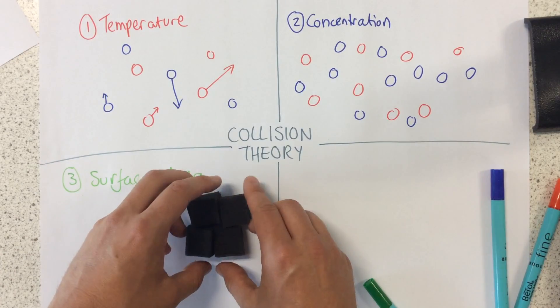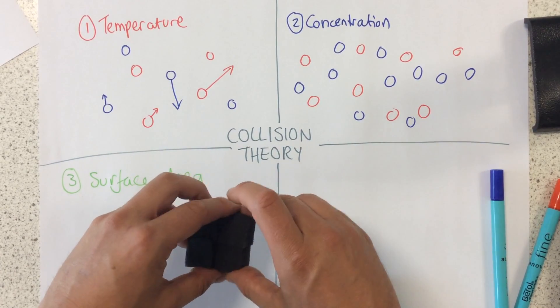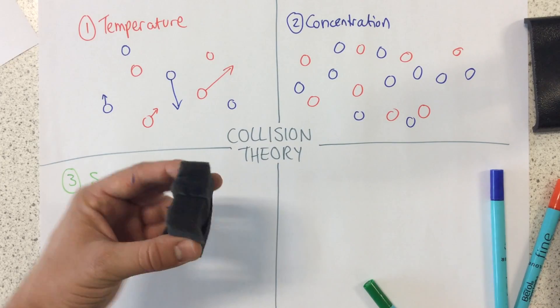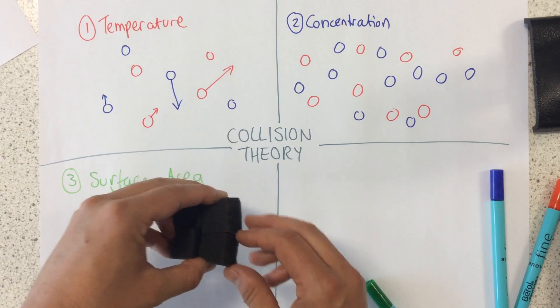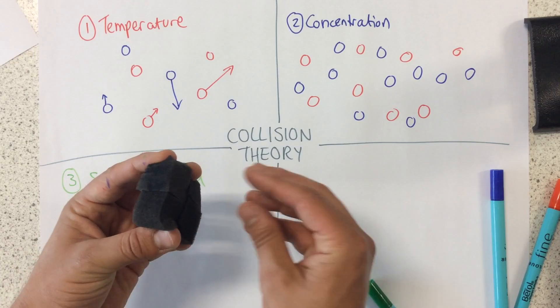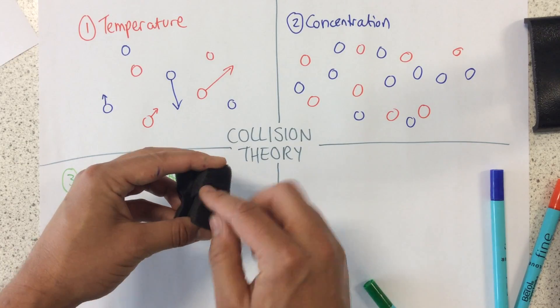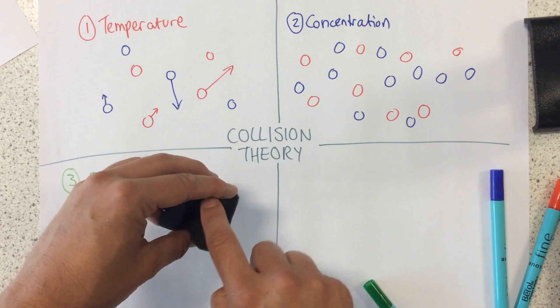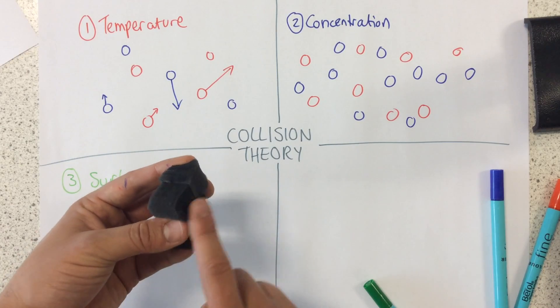I'm going to use these sponges to demonstrate this idea. So imagine this was my reactant that I was putting in some acid, reacting with some acid. At the moment, the acid can only work and react with the external surfaces, so there's going to be a limited rate of reaction.